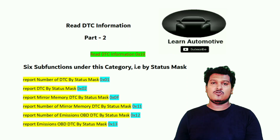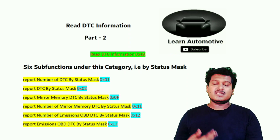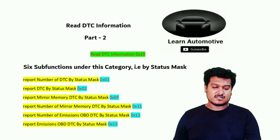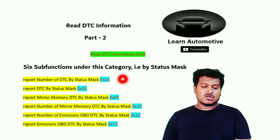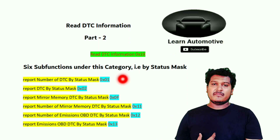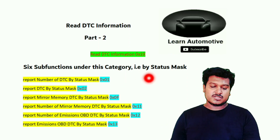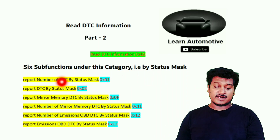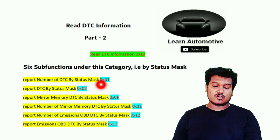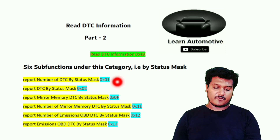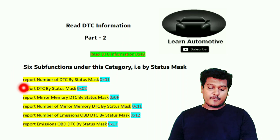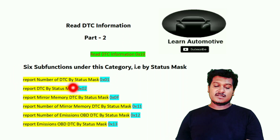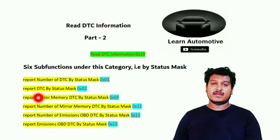Once all failures or faults have been fixed, the diagnostic service engineer will clear the DTCs. That is what DTCs are about. Our main agenda here is to go through the six sub-functions. In this video I am going to explain the first two sub-functions: report number of DTCs by status mask and report DTC by status mask — sub-functions 0x01 and 0x02.